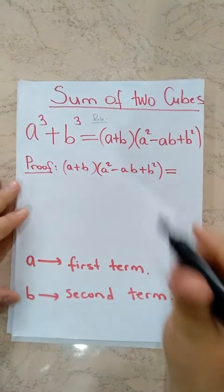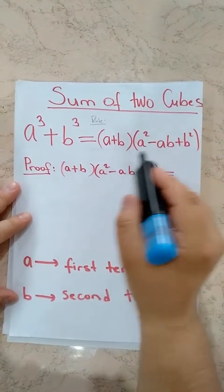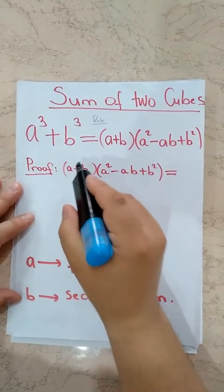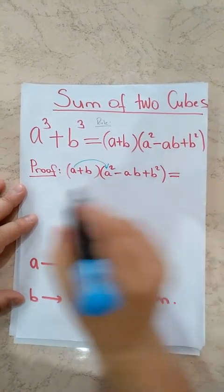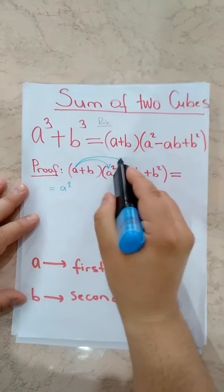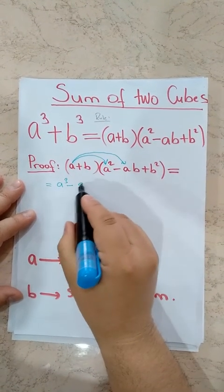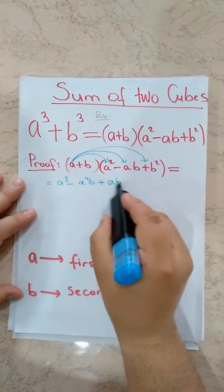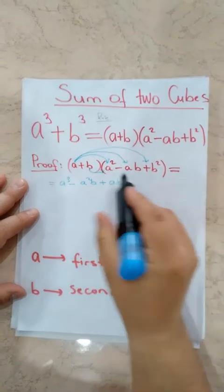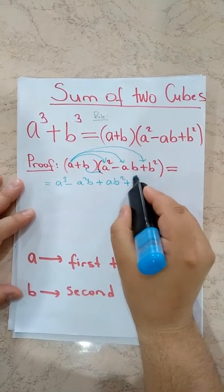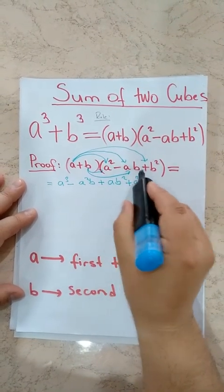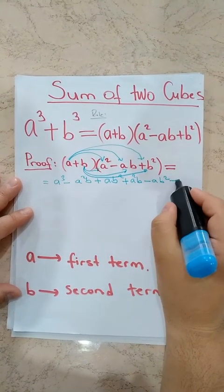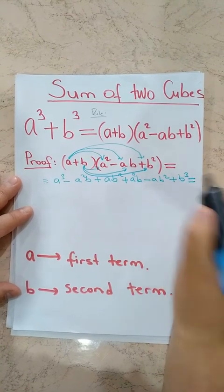Let's prove this expression. We start with A plus B times A squared minus AB plus B squared and multiply one by one. A times A squared equals A cubed. A times negative AB equals negative A squared B. Then A times B squared equals plus AB squared. Then B times A squared gives plus A squared B. B times negative AB equals negative AB squared.